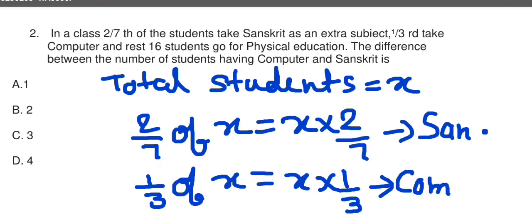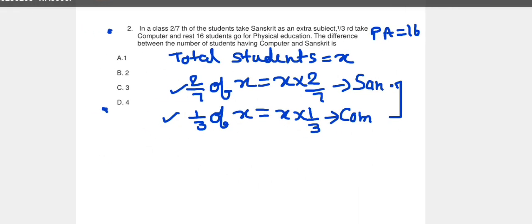And rest 16 students go to Physical education. The balance students after subtracting Sanskrit and Computer, they go to Physical education, and their exact value is given here as 16. Now, the question asks the difference between the total number of students having Computer and Sanskrit. First, to find this value, we need to know the value of X. So, based on the quantities we have, we will calculate. Physical education value is 16.